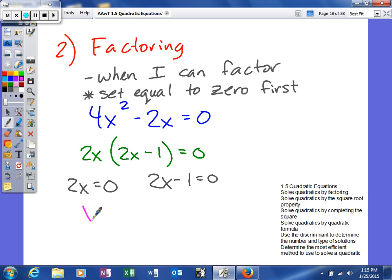We would divide both sides by 2 here and get x equal to zero. Here I would add 1 and then divide by 2.